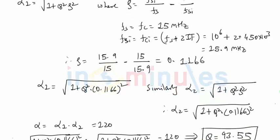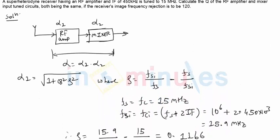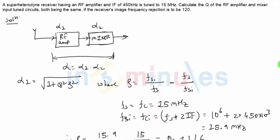So the only important part in this question was, apart from knowing all the formulas, that the overall alpha, which is image frequency rejection, will be nothing but the product of individual image frequency rejection ratios.